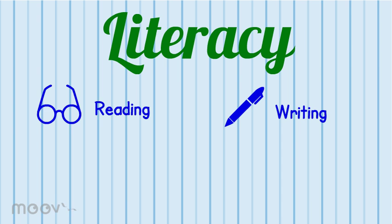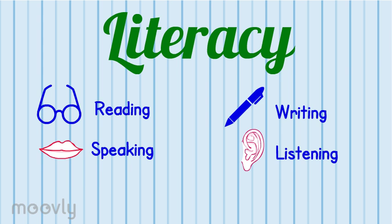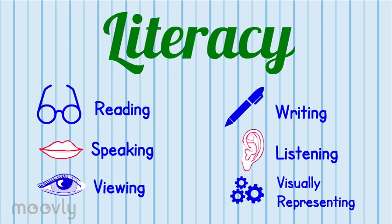For our purposes, we will focus on the six strands of literacy, including reading, writing, speaking, listening, viewing, and visually representing. These are all ways in which we create meaning from the texts and events we are exposed to and how we communicate our thoughts to those around us. We should also bear in mind that some of us may rely more heavily on different strands depending on our culture, upbringing, and cognitive capacity.